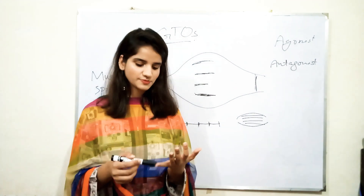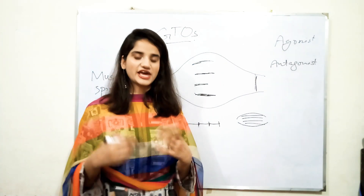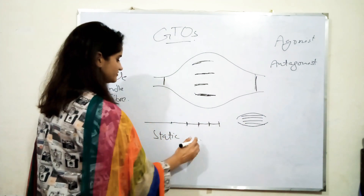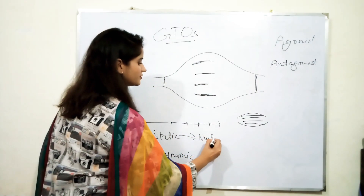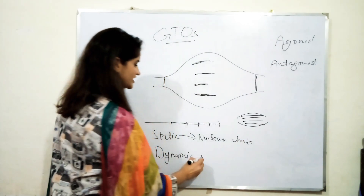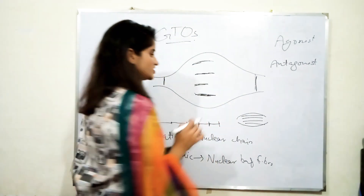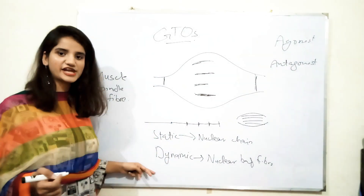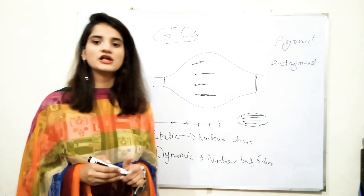There are two types of responses produced from muscle spindle fibers: static response and dynamic response. Static response refers to the amount of muscle length change, and dynamic response refers to the rate of muscle length change. Static response is produced by nuclear chain fibers, which are intrafusal fibers, while dynamic response is produced by nuclear bag fibers. So intrafusal fibers are of two types: nuclear chain fiber and nuclear bag fiber, producing static and dynamic activities respectively.